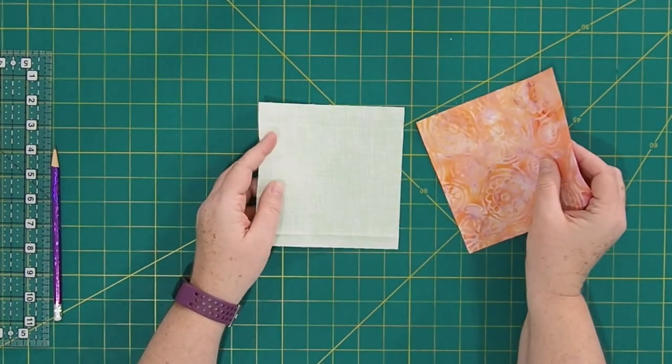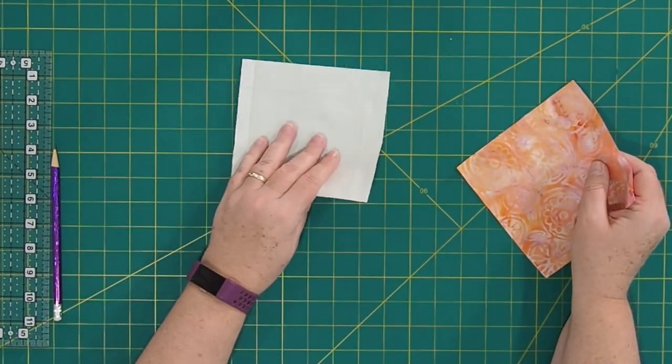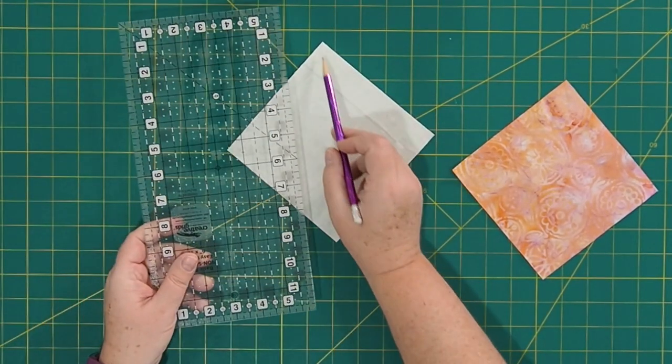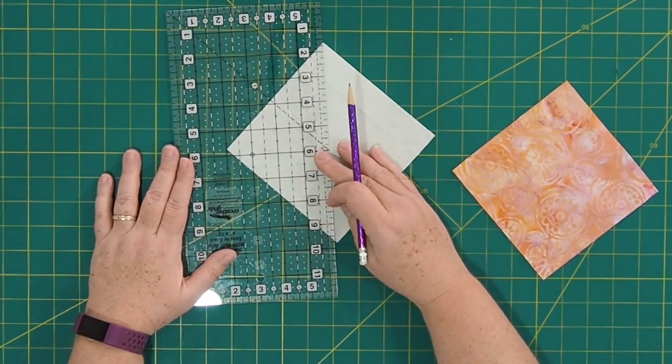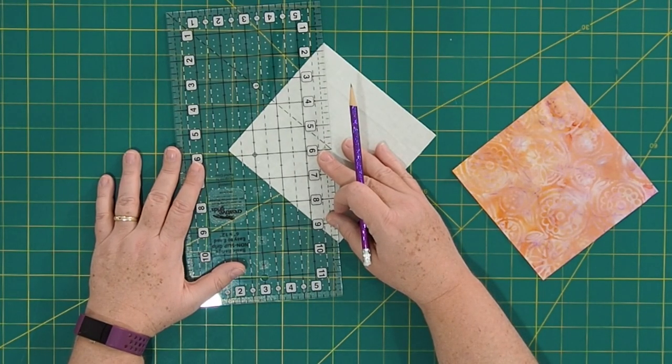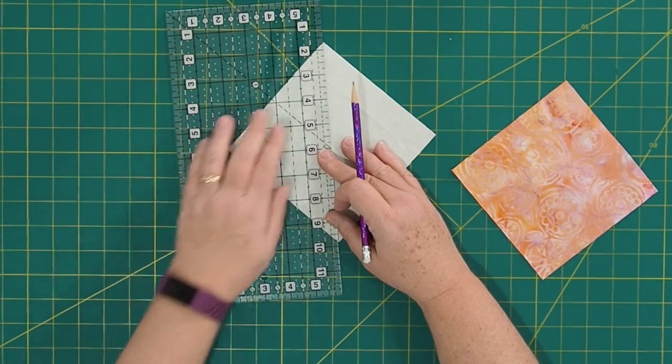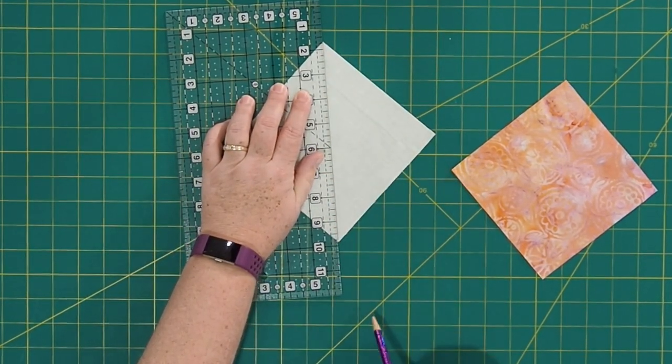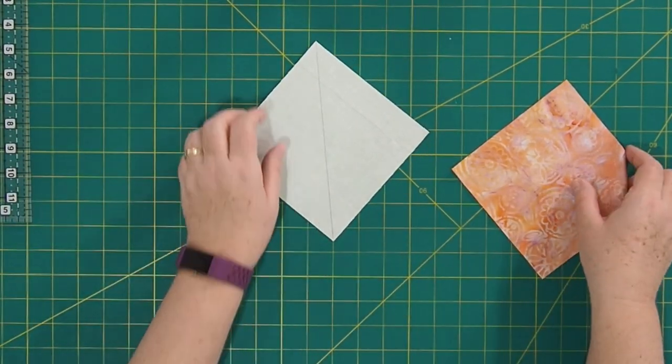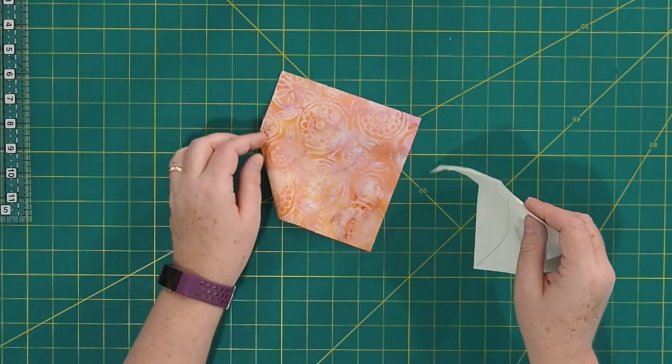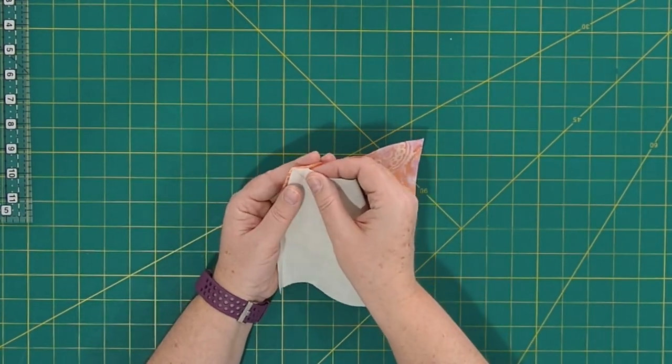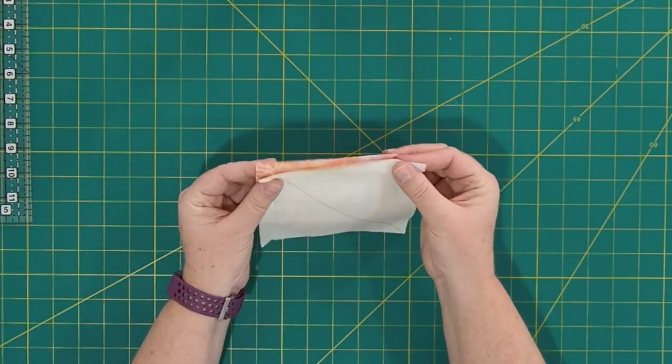Okay, so to make the half-square triangle, you have your pairs that you already paired up. You're going to take the lighter fabric that you're using on one, and you're going to draw a diagonal line from corner to corner. Now, I'm using a pencil here. I normally would not use a pencil. I would probably use a water-soluble pen or something like that. But this way you can see it really well on camera. I'm just going to draw that line nice and straight.